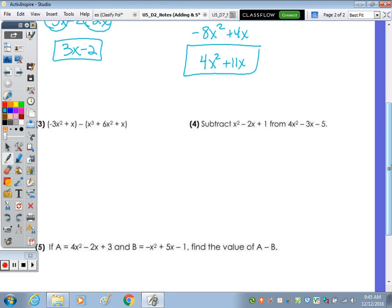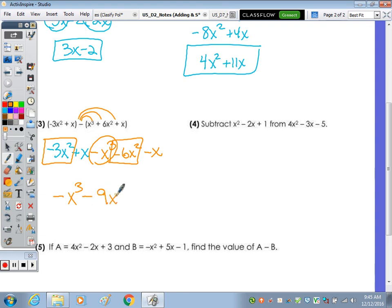Number 3. So negative 3x squared plus x and then minus x cubed. It's going to change every sign in the parentheses to its opposite. There is no cubic term, so I'm going to write that first. Combining negative 3x squared and minus 6x squared. Negative 3 minus 6 is a negative 9. And this positive x, negative x cancel. So you end up with a binomial.